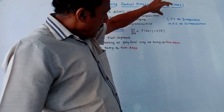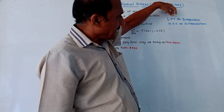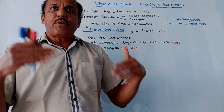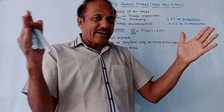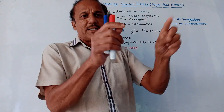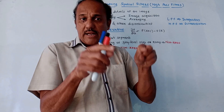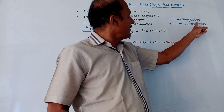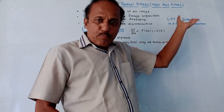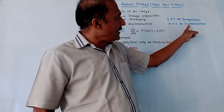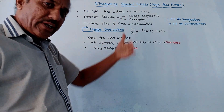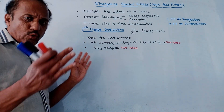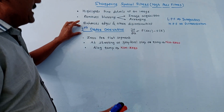As we studied earlier with low pass filters, performing averaging means adding all values and multiplying by 1/9 or 1/16 — this is integration. High pass filter is the opposite operation, so we need to perform differentiation, that is, we want to take the derivative. There are two types of derivatives we are going to discuss: first is the first order derivative.